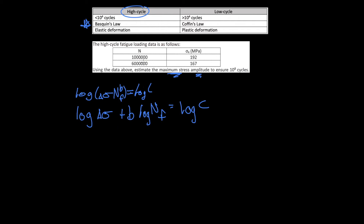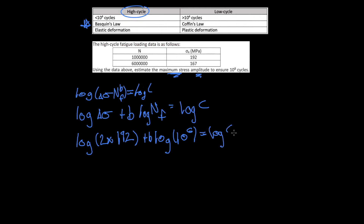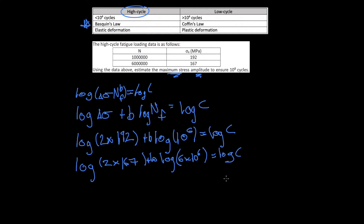Plugging in our two data points, remembering this is the stress range so we multiply the stress amplitude by two: log of 2 times 192 plus B times log of 10 to the 6 equals log C, and similarly for the second data point with stress amplitude 167 and 10 to the 6 cycles. These constants are the same in both equations because it's the same material under high cycle fatigue. So we have a system of two equations with two unknowns.